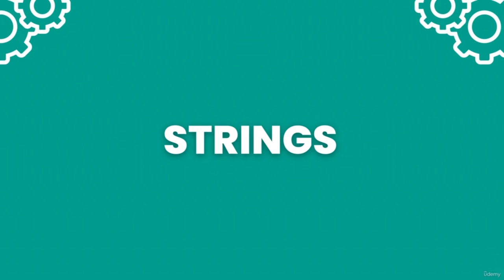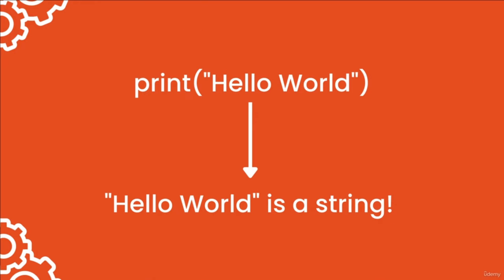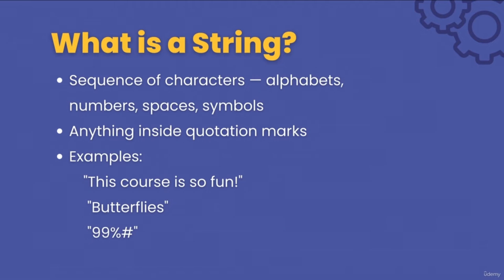Hey guys, in this video we're going to learn about strings. Remember print('hello world')? 'Hello world' is what you call a string. A string is a sequence of characters — meaning alphabets, numbers, spaces, and symbols. Any characters you put inside quotation marks is a string. Here are some examples of strings: 'This course is so fun', '9', '$#%'. Basically, anything you put inside quotation marks is a string. You should use strings whenever you want to print or store a series of characters.